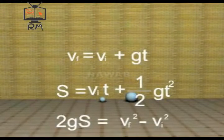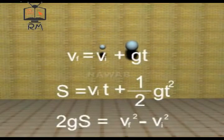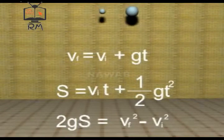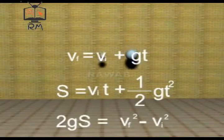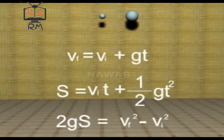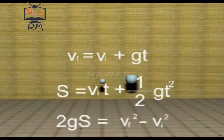Equations of motion for bodies falling freely can be written as: Vf equals Vi plus Gt. S equals Vit plus 1 over 2 Gt square. 2 Gs equals Vf square minus Vi square.